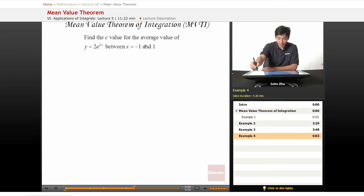So, we just apply our equation, so f of c equals 1 over 1 minus negative 1, or 1 plus 1, times the integral from negative 1 to 1, 2e^(2x) dx.